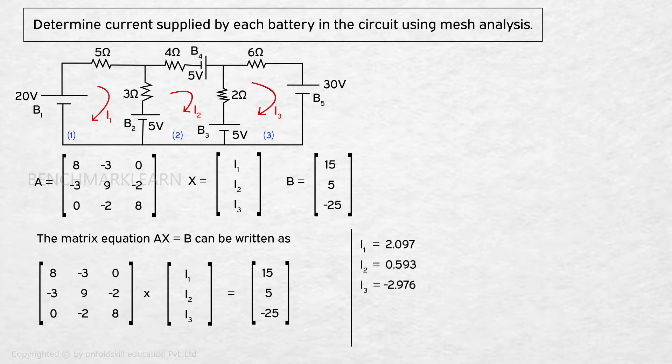we get I1 equal to 2.097, I2 equal to 0.593, I3 equal to minus 2.976.